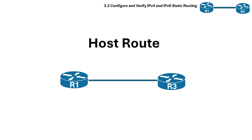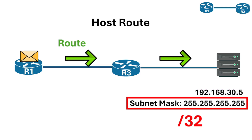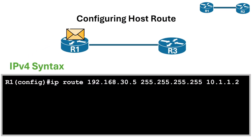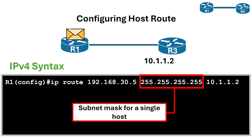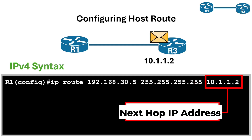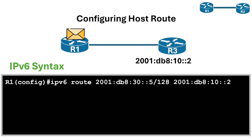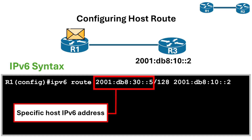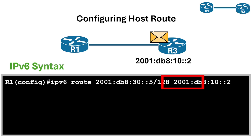Next is the host route. In static routing, a host route specifically directs traffic to a single individual device — a host — rather than an entire network. This is achieved by using a /32 subnet mask for IPv4, ensuring the route only matches the exact IP address specified. To configure a host route in IPv4, we put the specific host IP address after 'ip route', then the subnet mask /32 (or 255.255.255.255), and the next-hop router to reach that host. To configure a host route in IPv6, we use 'ipv6 route' with the specific host IPv6 address, the /128 prefix for a single exact address, and the next-hop IPv6 address.